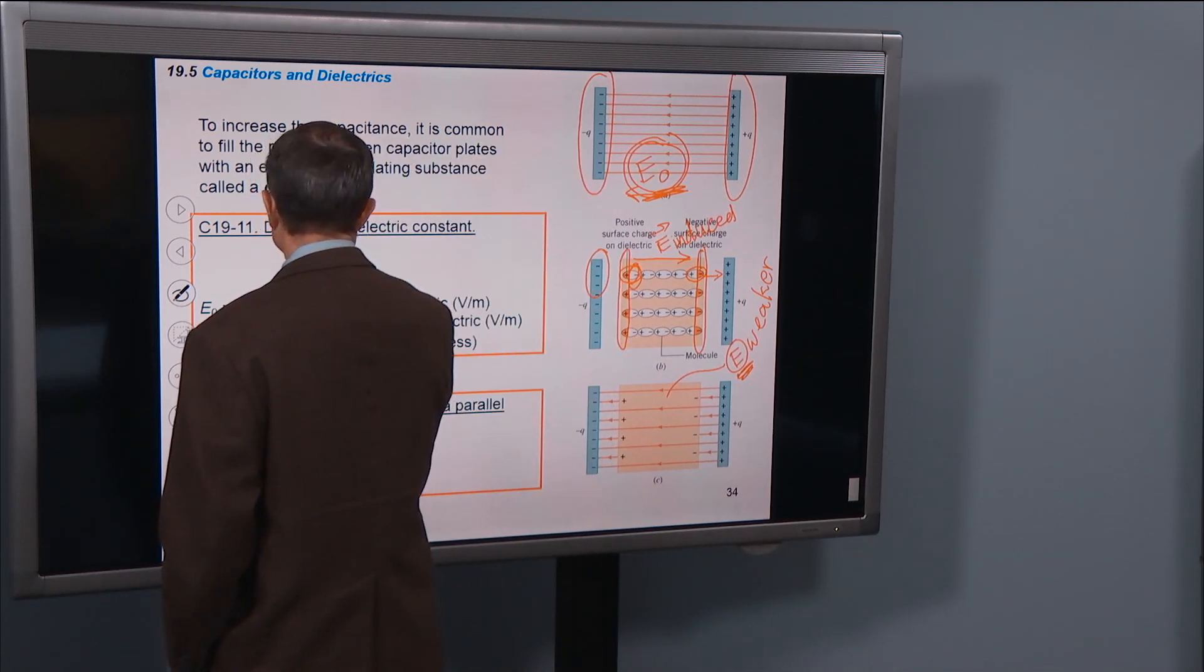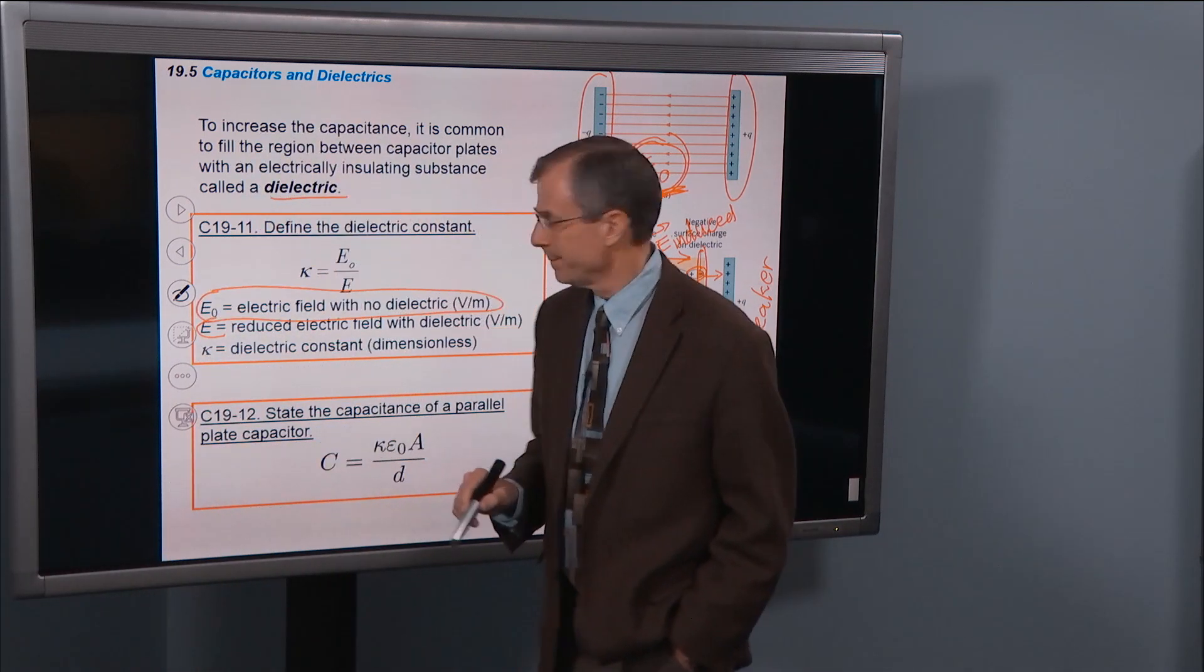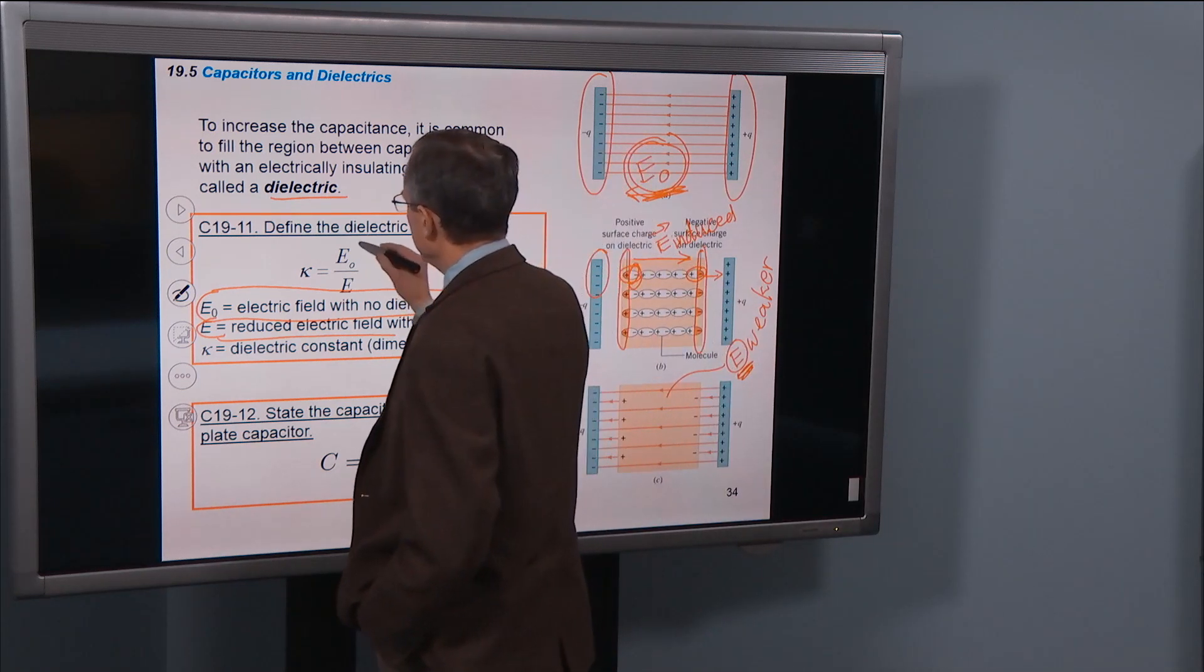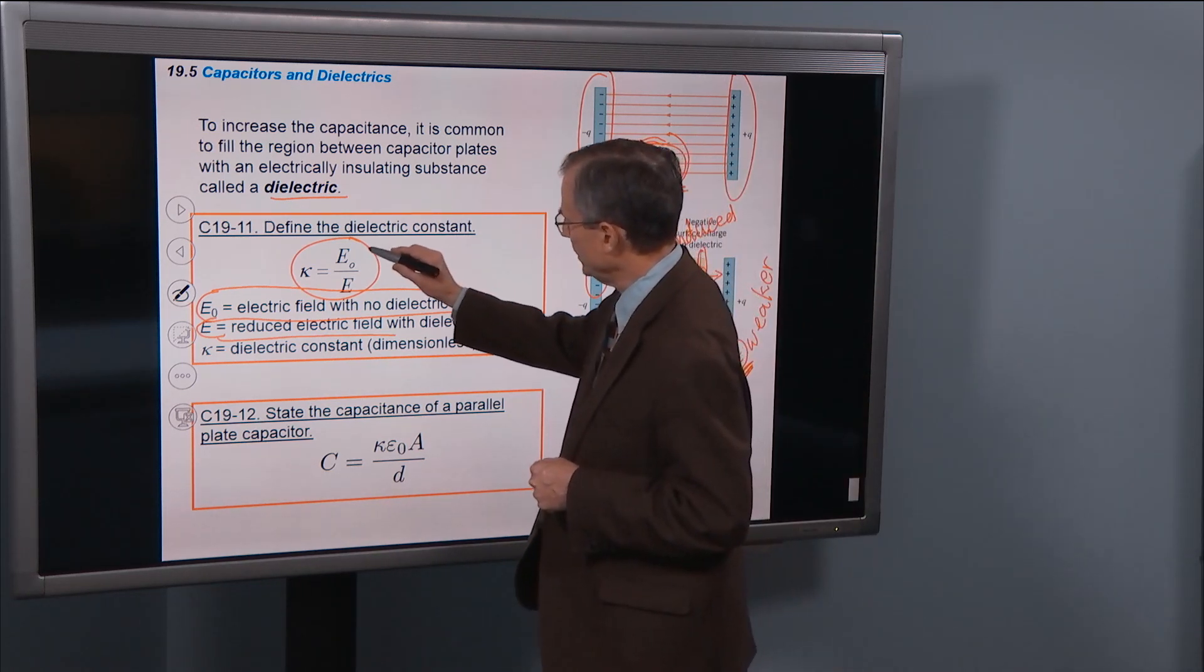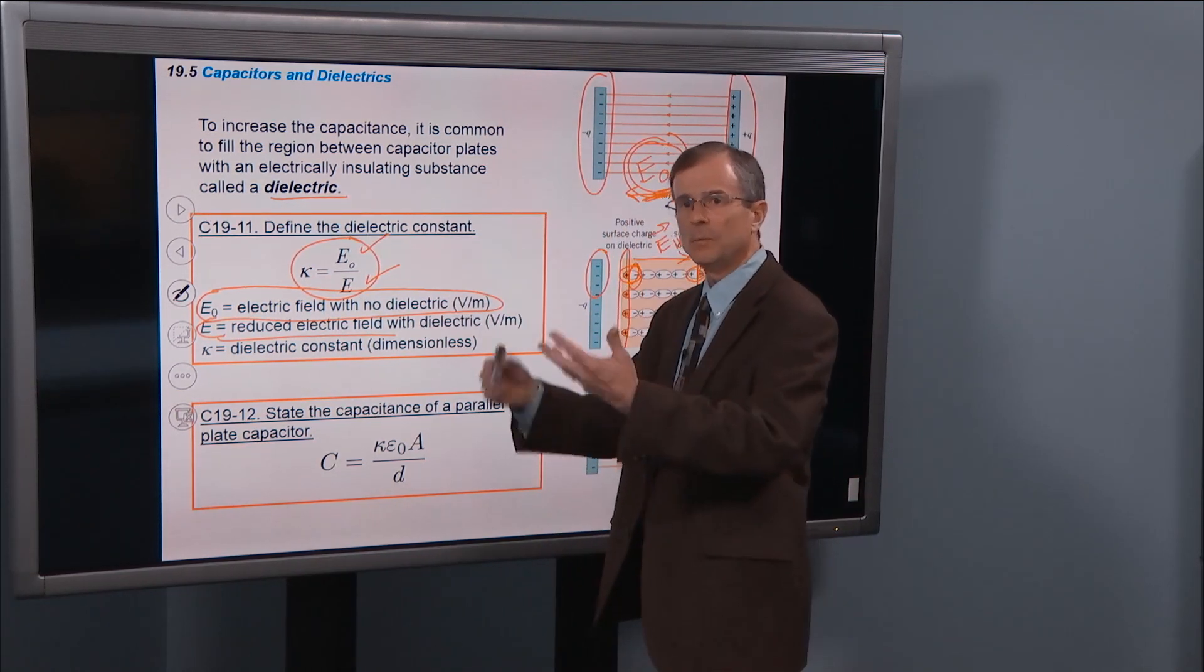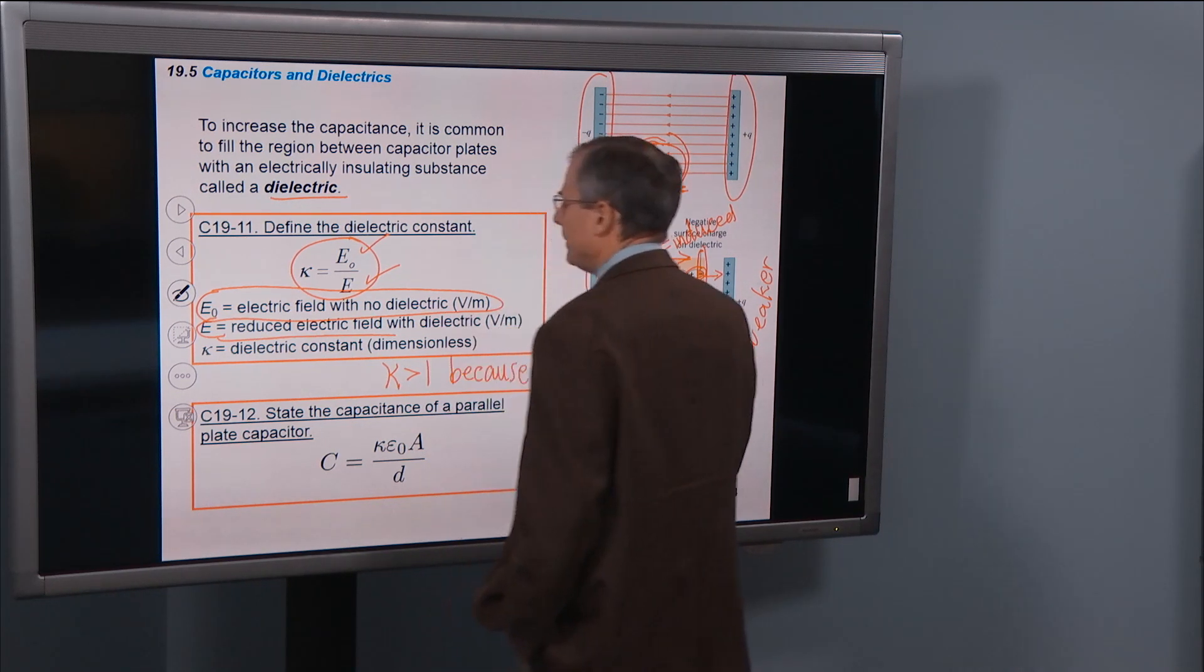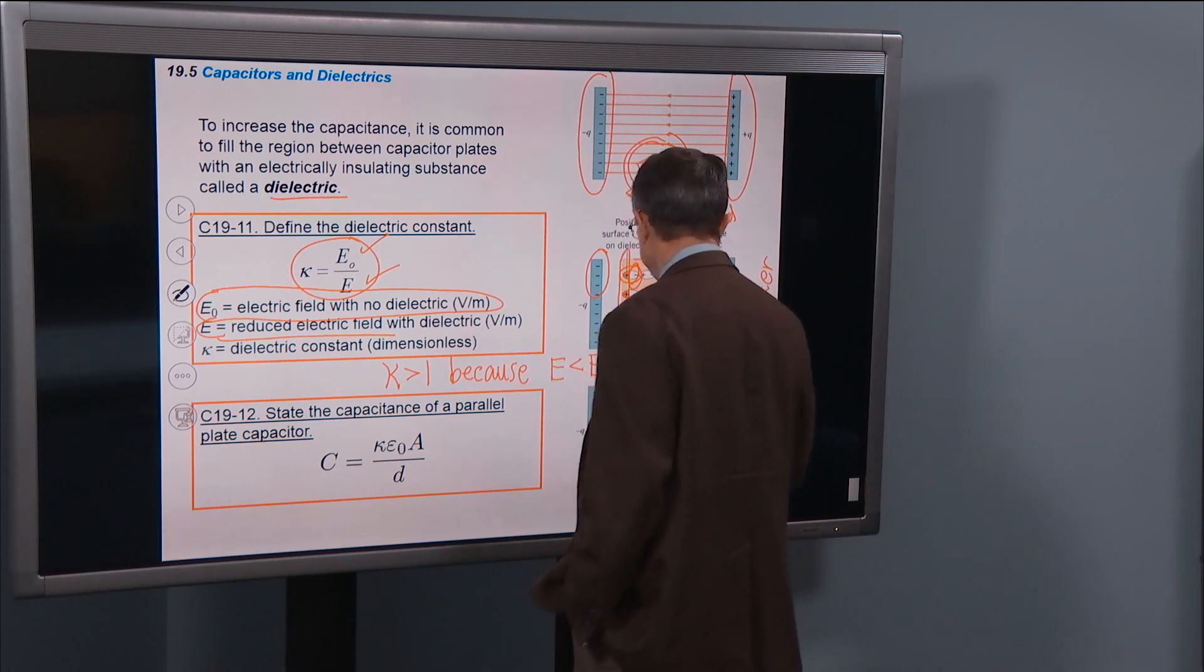E0 is the electric field with no dielectric present. It's measured in volts per meter. And then E is the reduced electric field. So it's going to be less. E is going to be less than E0. And the dielectric constant is defined as the ratio of these two. So the original electric field divided by the reduced electric field, which is less. So this number, this ratio is going to be bigger than one. Because the E is less than E0. It's reduced.